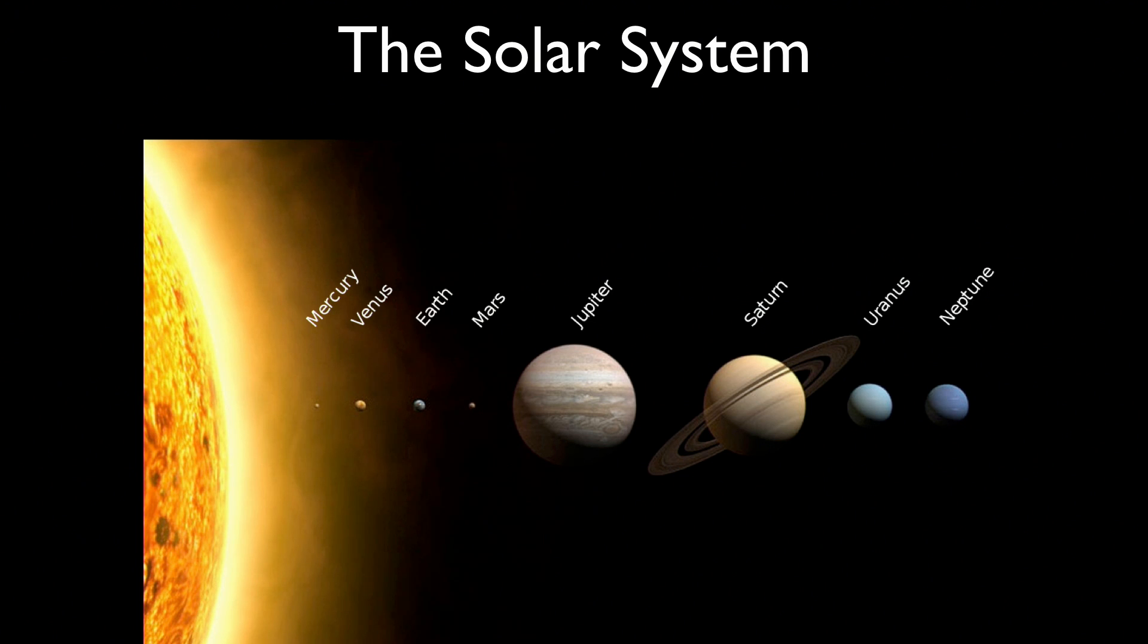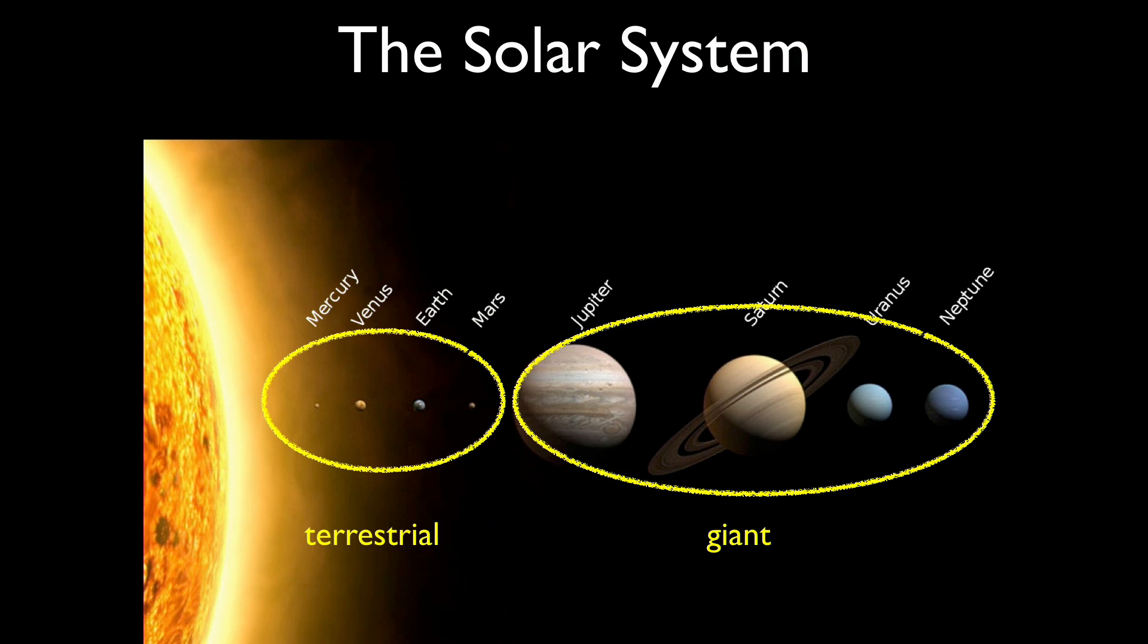To start off, we all know and love our solar system. We've got eight planets. We've got four small rocky planets, the terrestrial planets close to the Sun, and four giant planets farther away. Two gas giants, Jupiter and Saturn, two ice giants, Uranus and Neptune.